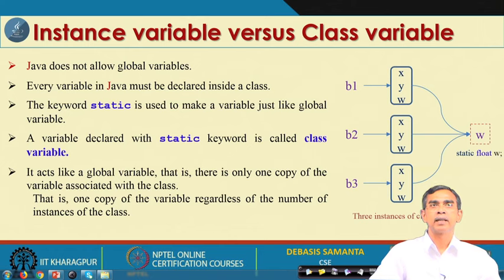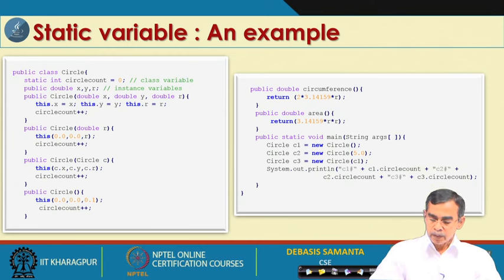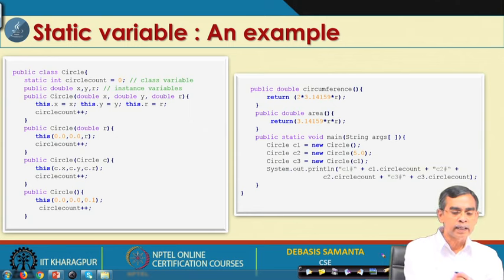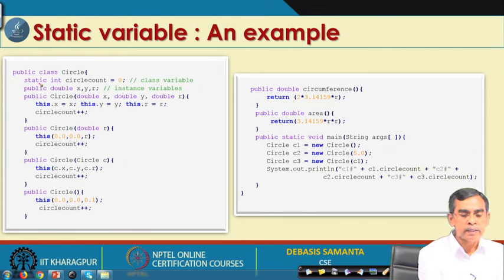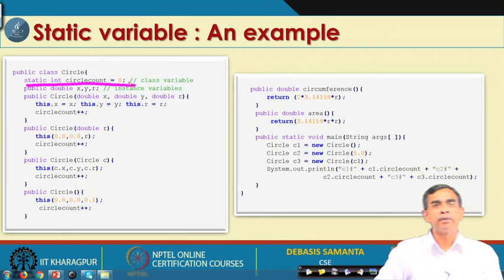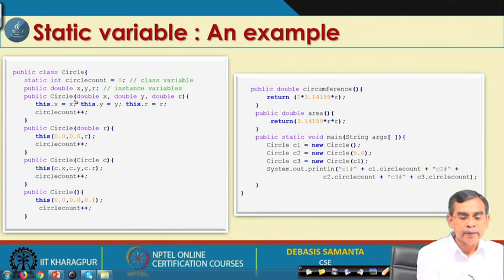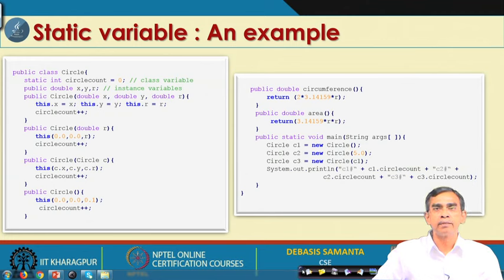If it is a class variable — a static variable — then it will have only one instance for all objects, meaning it is shareable across all objects. This is the distinction between instance variable and class variable. To make the concept of static variable more understandable, let us discuss a class named Circle, where we declare a variable circle_count declared as static, making it a class variable. The other three variables X, Y, R are public double and are instance variables.